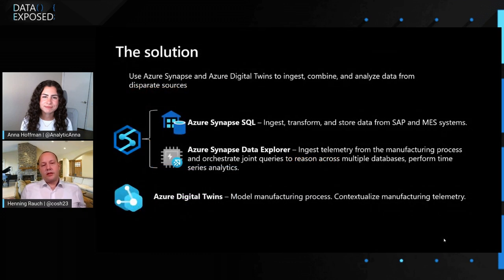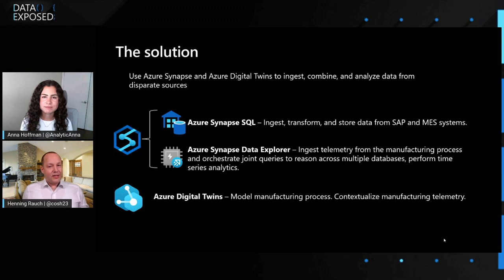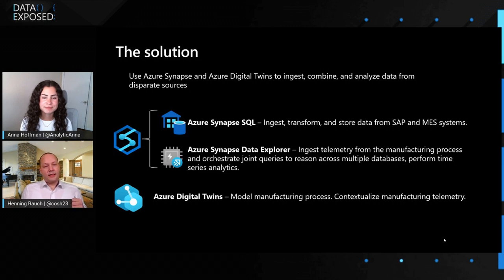The solution involves putting data into Synapse and using Azure Synapse SQL to ingest, transform, and store data from the ERP system such as SAP and the MES system. Azure Data Explorer is used to ingest the telemetry data from the manufacturing process, and orchestrate joint queries to reason across multiple databases and perform time series analytics. Additionally, you leverage Azure Digital Twins to model the entire manufacturing process and contextualize the manufacturing telemetry.